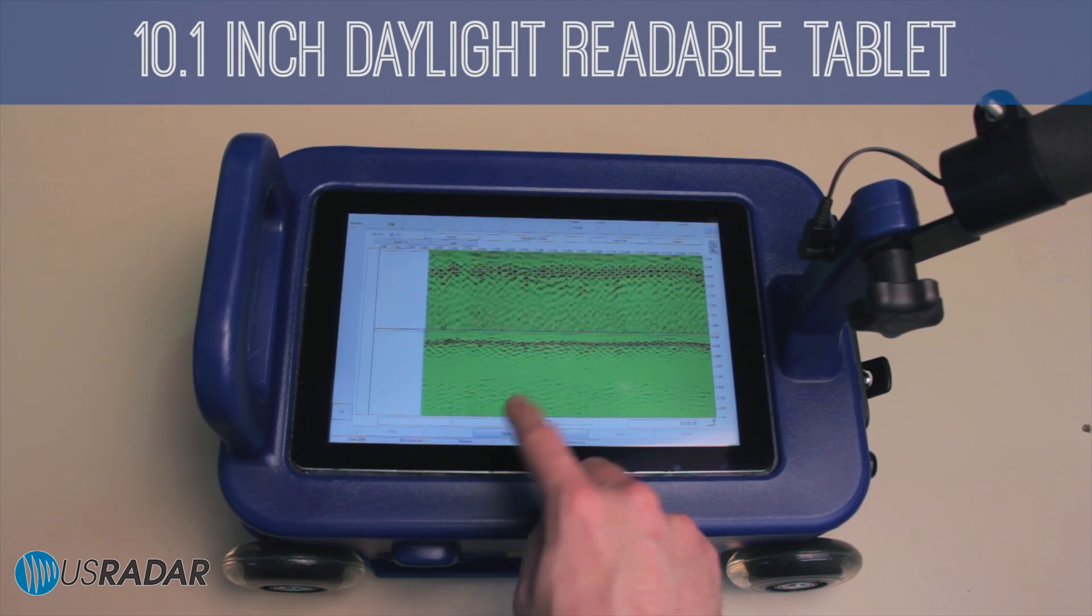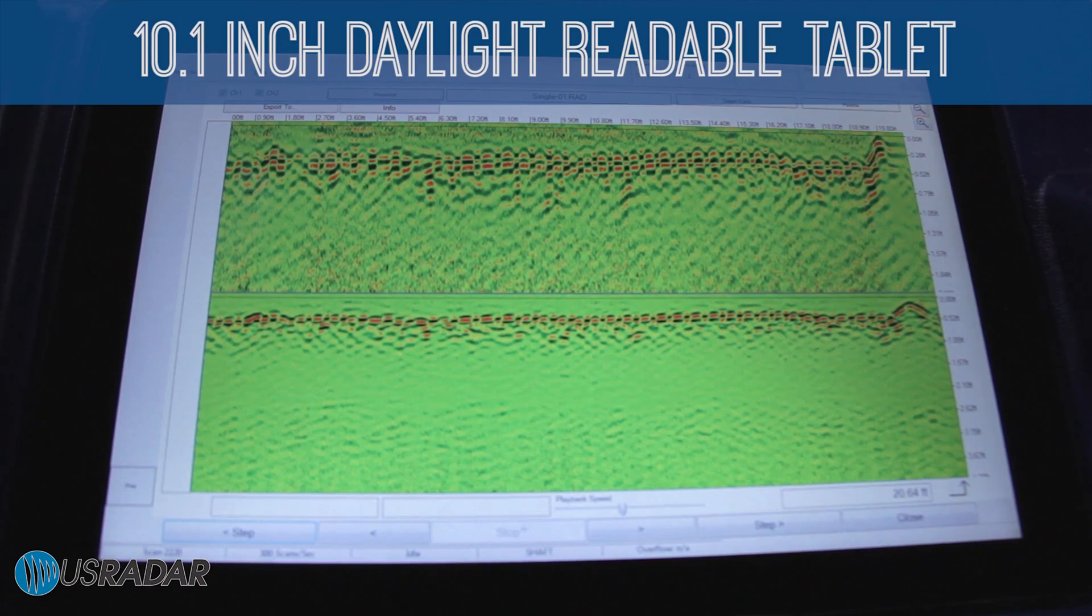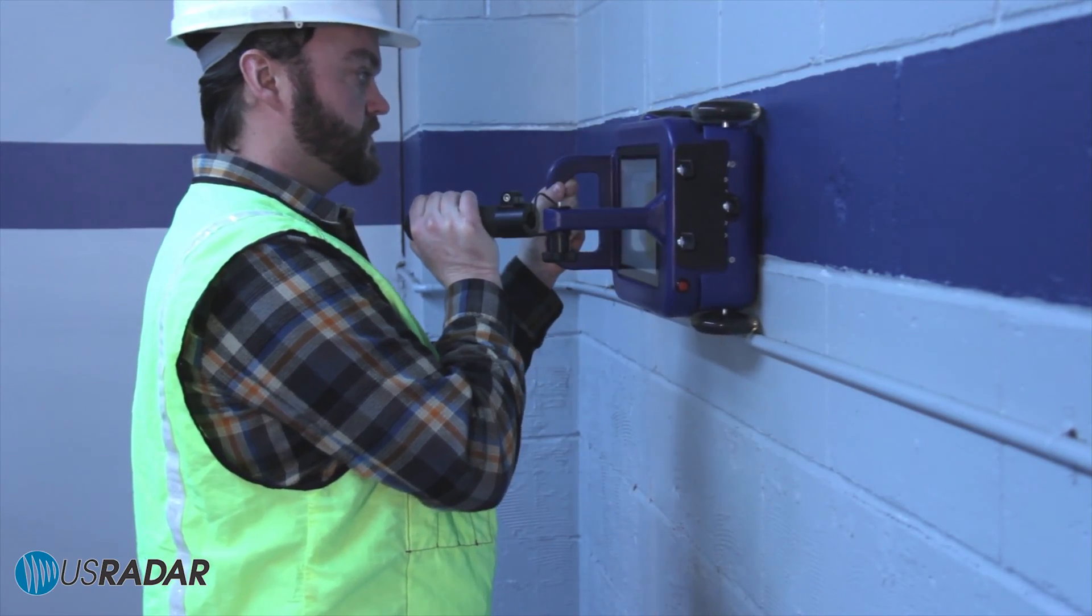The Quantum Mini is an all-in-one system which features a 10.1-inch daylight-readable tablet display that allows you to clearly see the data.